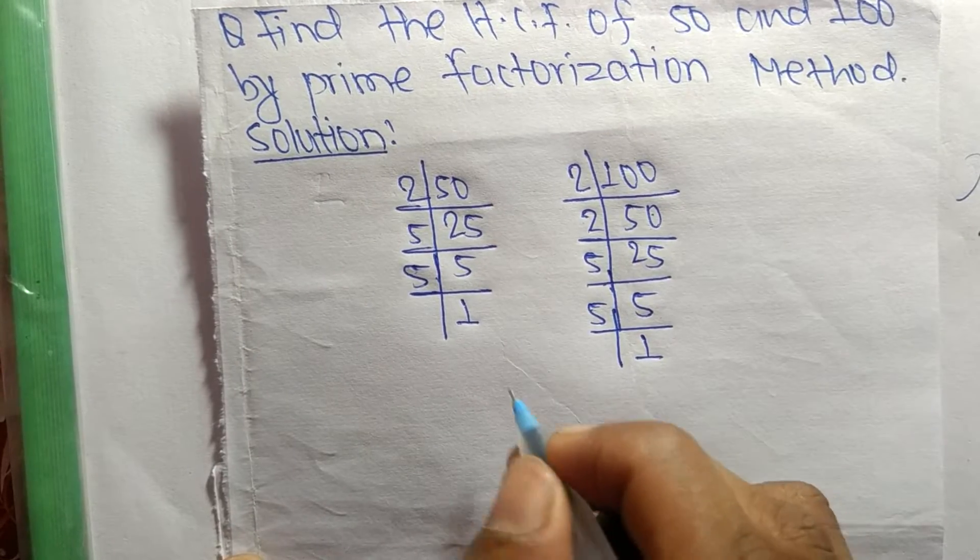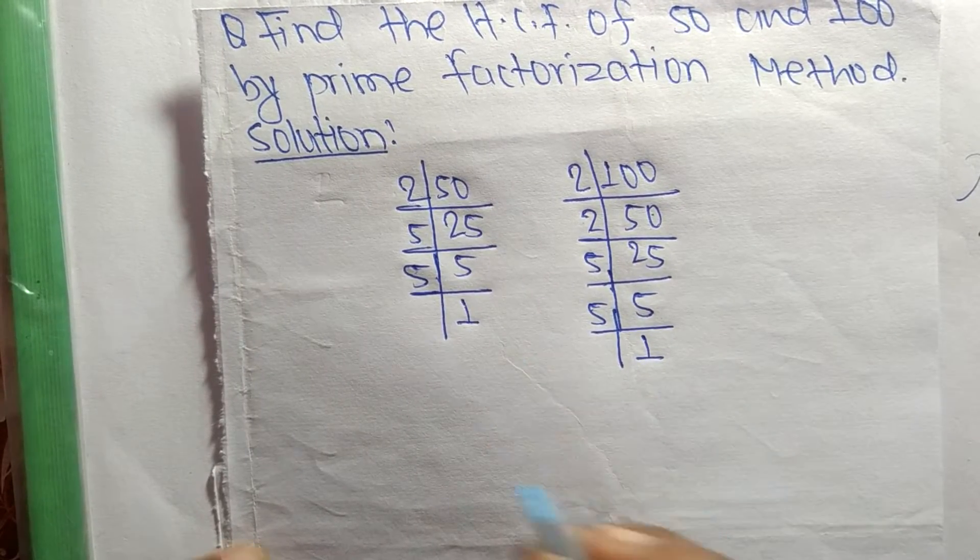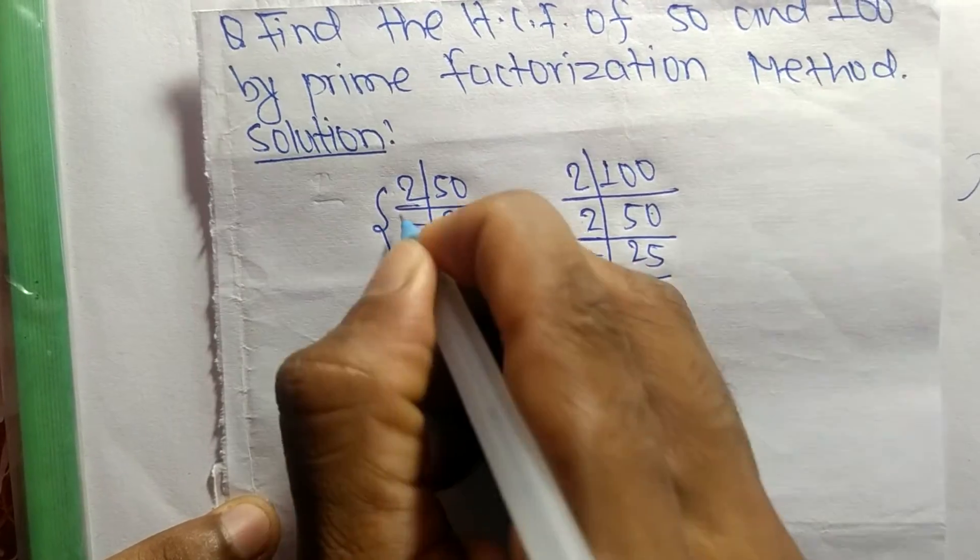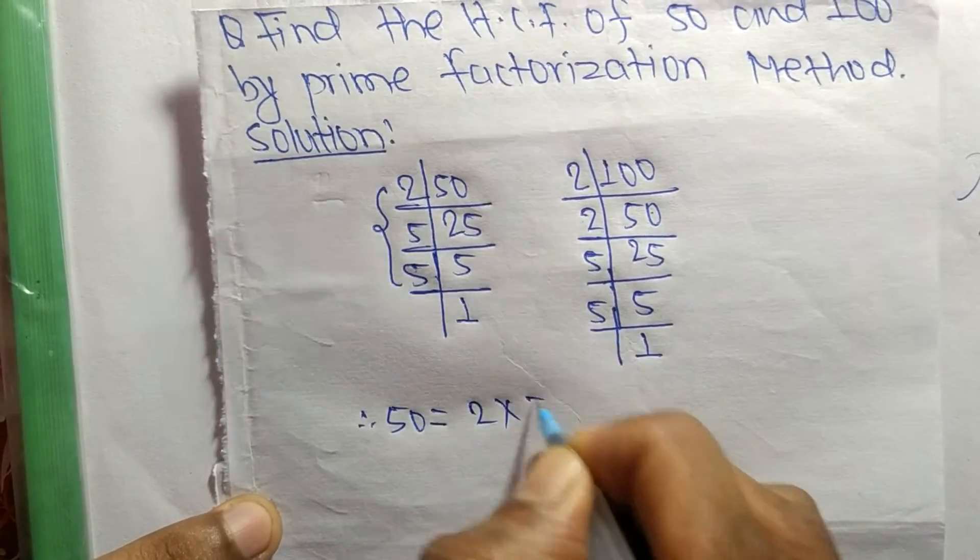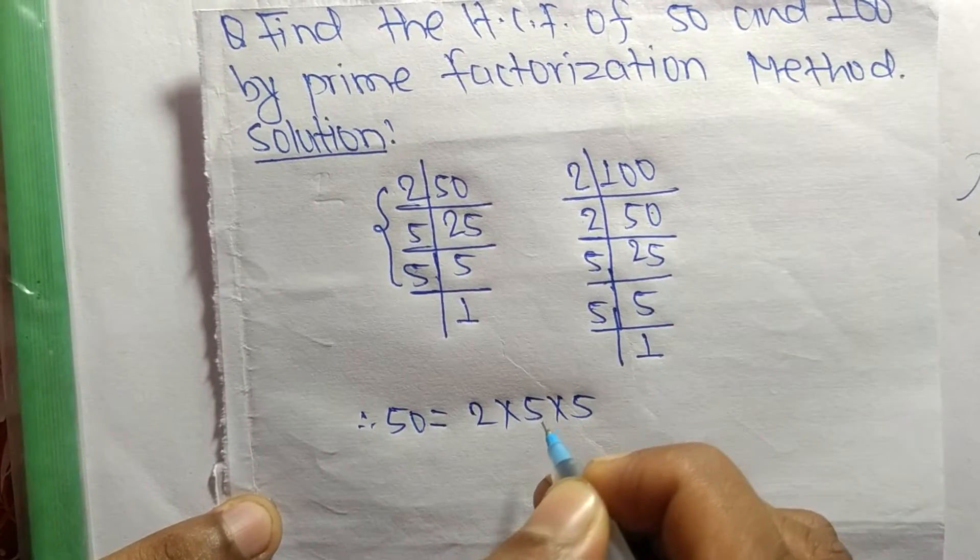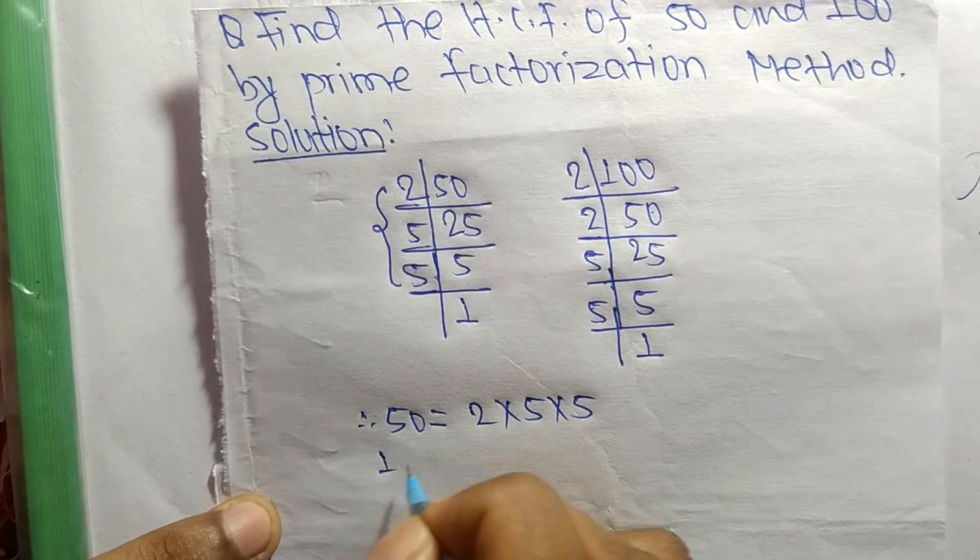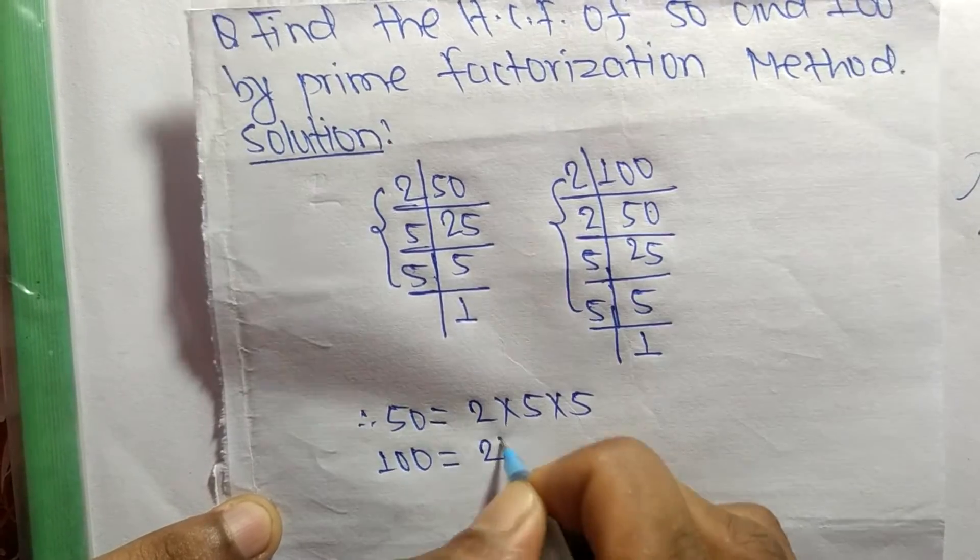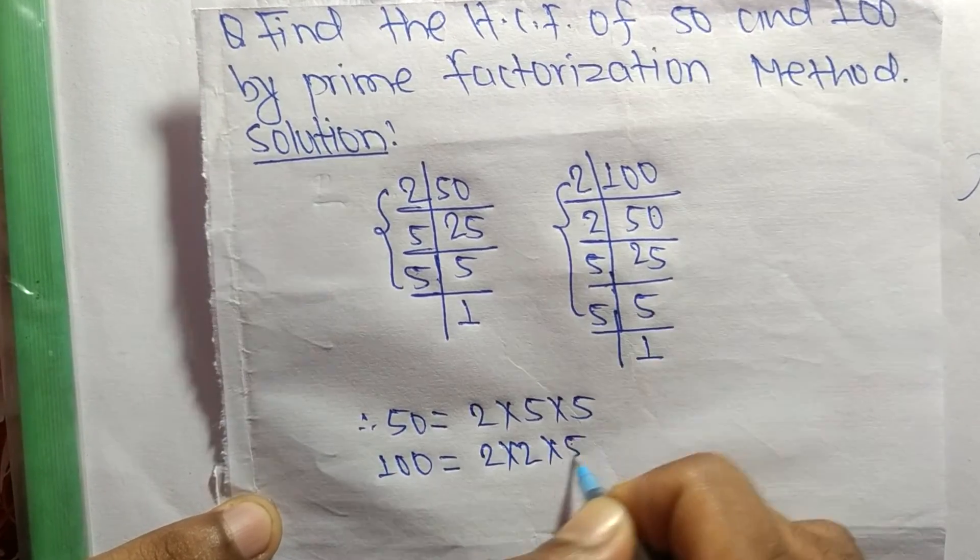From these prime factors we can write: 50 equals 2 times 5 times 5. Likewise, 100 equals 2 times 2 times 5 times 5.